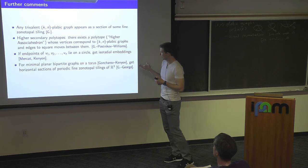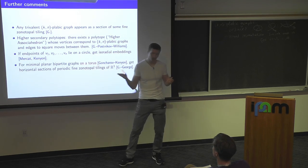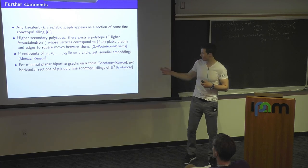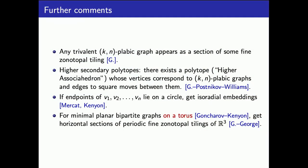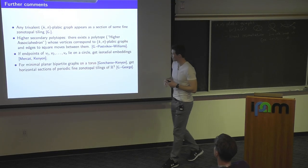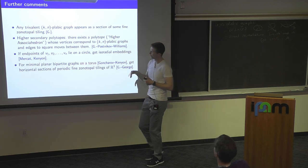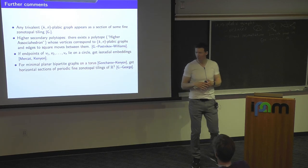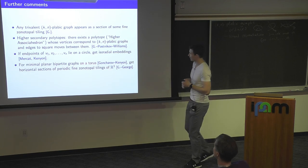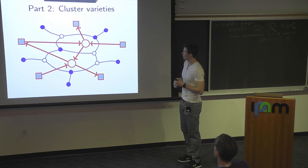Finally, if you do care about graphs on the torus, it seems like everything works for the torus. Instead of zonotopal tilings of a single zonotope, you get periodic tilings of R^3, and you get horizontal sections of these periodic tilings. It works for the torus but doesn't work for non-reduced plebik graphs.